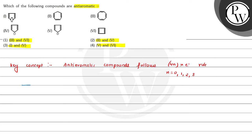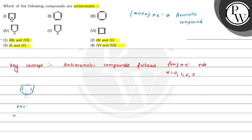The first compound has oxygen present and 2 double bonds. The compound which follows the 4n pi electron rule is anti-aromatic, while the compound which follows the 4n+2 pi electron rule is aromatic. Here, 2 double bonds are present and the lone pair of oxygen is also in resonance, so the number of pi electrons is 6, which follows the 4n+2 rule — so this is an aromatic compound.